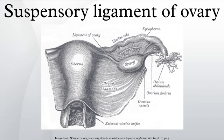The suspensory ligament of the ovary is one continuous tissue that connects the ovary to the wall of the pelvis. There are separate names for the two regions of this tissue. In the anterior region, the suspensory ligament is attached to the wall of the pelvis via a continuous tissue called peritoneum. In the more posterior region, the suspensory ligament is attached to the ovary via a continuous tissue called the broad ligament.